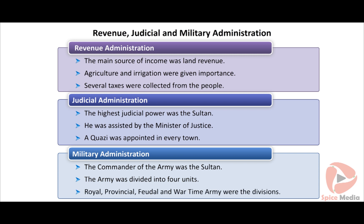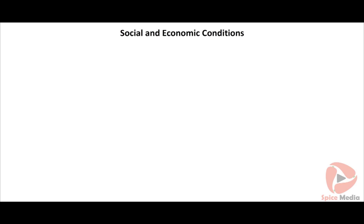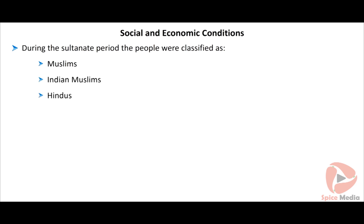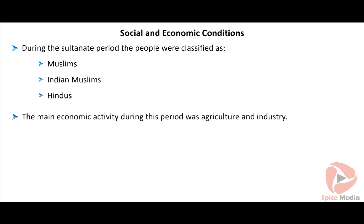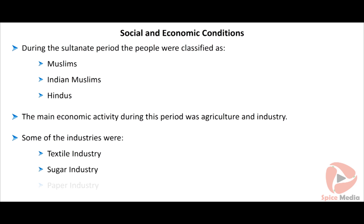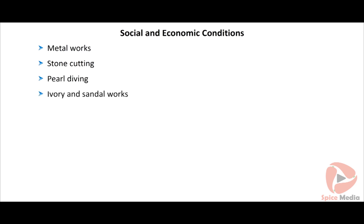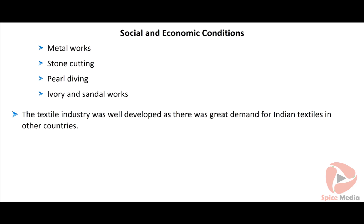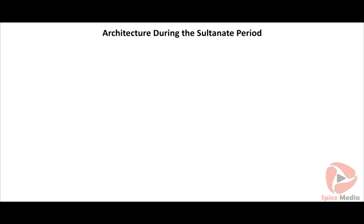Revenue, judicial and military administration: The main source of income for the empire was land revenue. To increase revenue, agriculture and irrigation were given importance. House tax, trade tax, mines tax and horse tax were some of the taxes collected. The highest judicial power was the sultan, assisted by quasi-ulkuzar, the minister of justice. A quasi was appointed in every town to maintain law and order. Criminals were punished severely. The commander of the army was the sultan. The army was divided into four units: royal, provincial, feudal and wartime army.